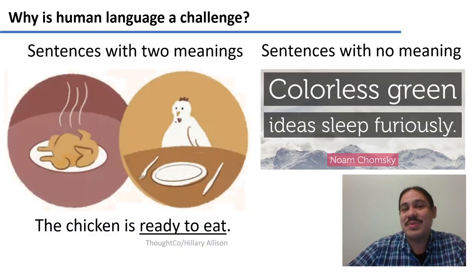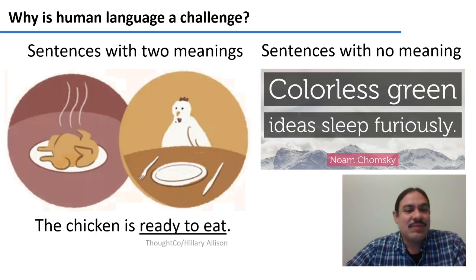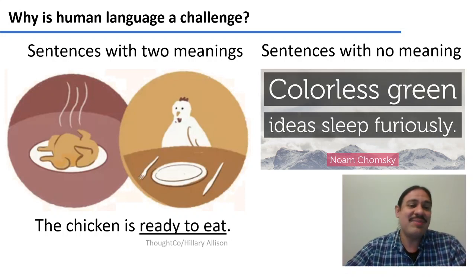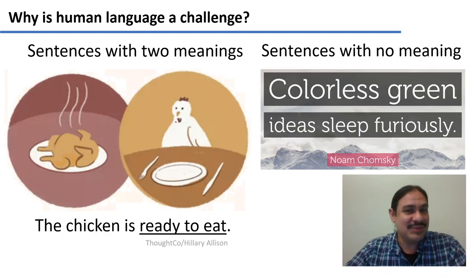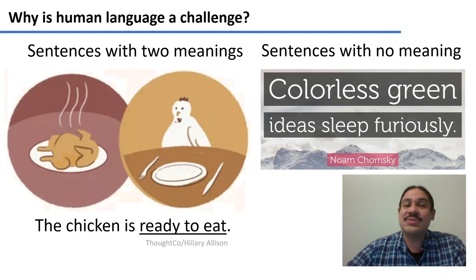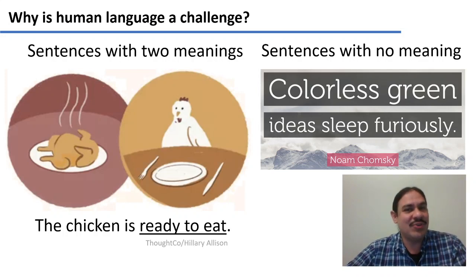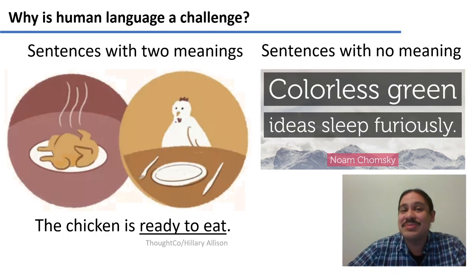Even in languages that we might be familiar with, such as English, there are many challenges. For example, there are sentences that can have two very different meanings. In the sentence 'the chicken is ready to eat,' maybe it's the food, or maybe there's a chicken that is waiting for the food. On the other hand, there are sentences that are perfectly correct but have no meaning at all. For example, 'colorless green ideas sleep furiously.' The sentence is perfect English, and yet you cannot imagine what it could mean.